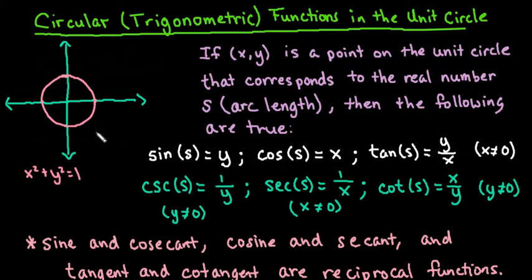So what we have here is a picture of the unit circle. The unit circle is basically just the equation of the circle x squared plus y squared equals 1, where the center is at the origin, and the radius is 1.